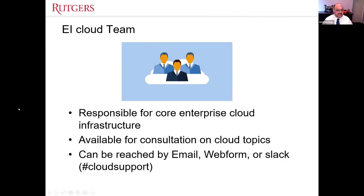The EI cloud team is responsible for what we call core enterprise cloud infrastructure. We work with VPN tunnels, billing, and that base foundation that you build on. We're happy to work with various groups working with the cloud — we'll look at your workloads and talk about what tools and services might be available. We're pretty easily reachable: there are email addresses on our website for different purposes, web forms to make various types of requests, and we monitor the cloud support channel on Slack for more informal questions.